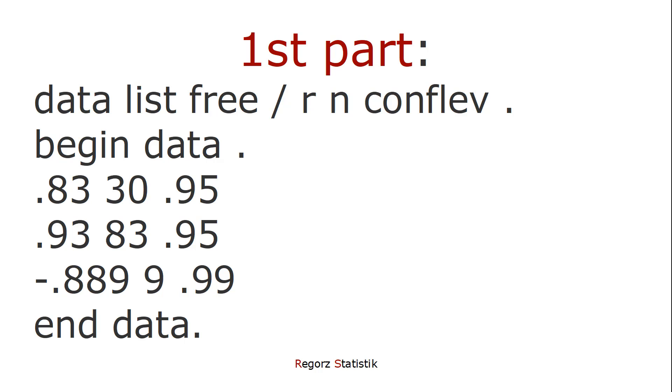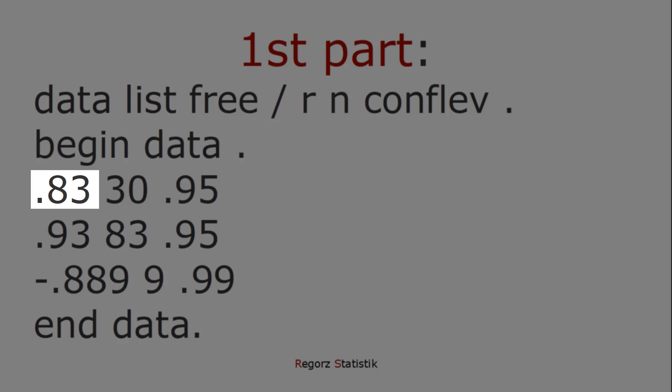In this case, each row would lead to one confidence interval. The first number in each row is the correlation. The second number in each row is the sample size. And the third number in each row is the confidence level.